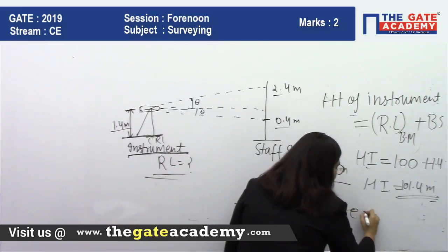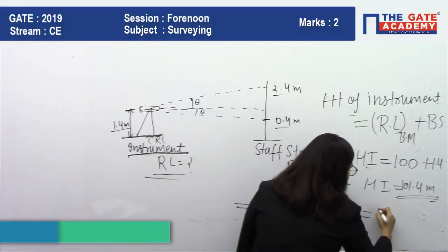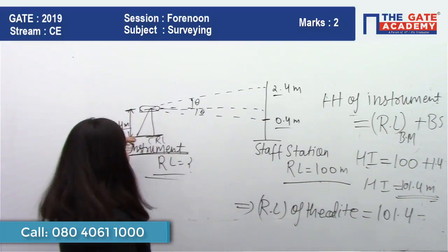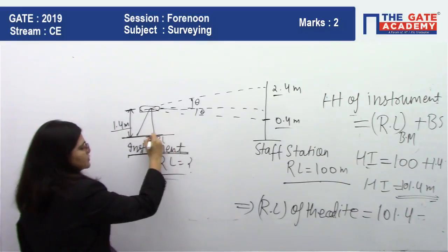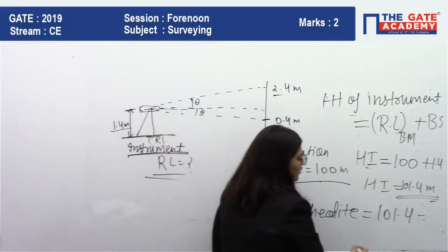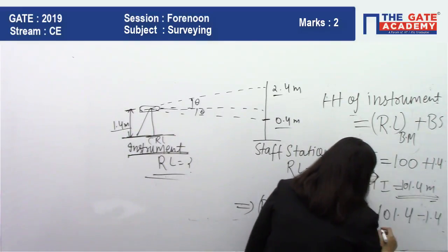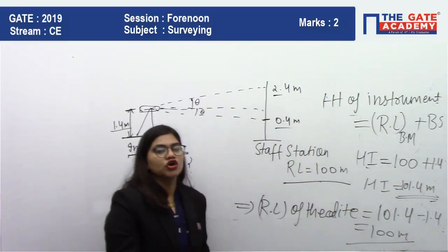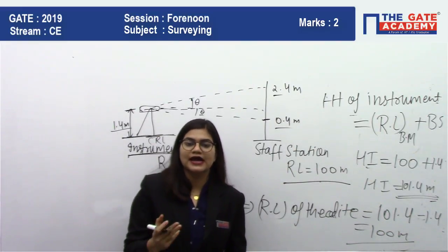The RL of theodolite is 101.4. If you just subtract this, you will come to this place. This will be 101.4, this will be 100 meters. So your theodolite and your staff station are at the same place, so the answer will be the same: 100 meters.